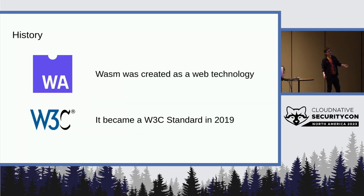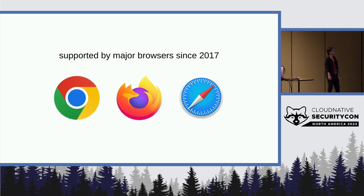For a little bit of history, Wasm was a web technology. It was created in the web. That's why it's called WebAssembly, after all. And it became a W3C standard in 2019. Even before then, back in 2017, it was supported in all the major browsers. So it's been out there for a few years now.